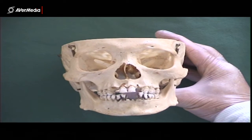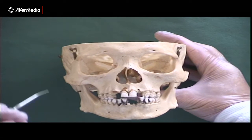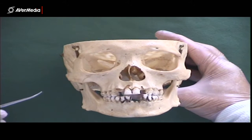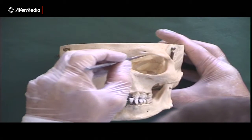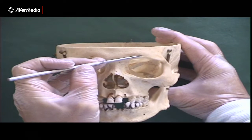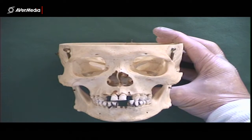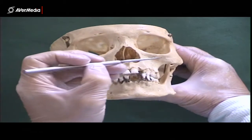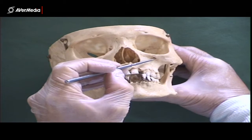We're looking at the anterior aspect of a real human skull. Firstly, the supraorbital foramen — just superior to the orbit, there's a little hole there. That's the supraorbital foramen. And then inferior to the orbit, we have the infraorbital foramen.